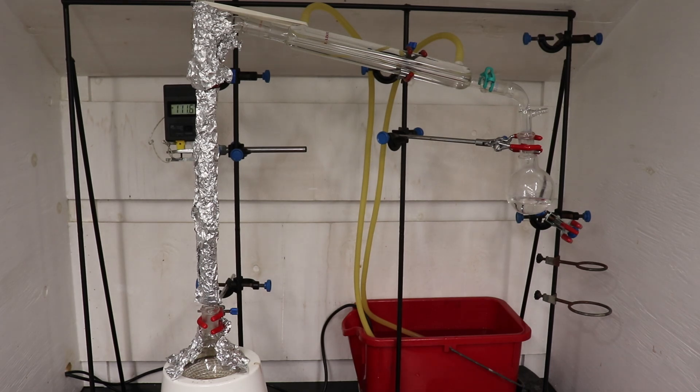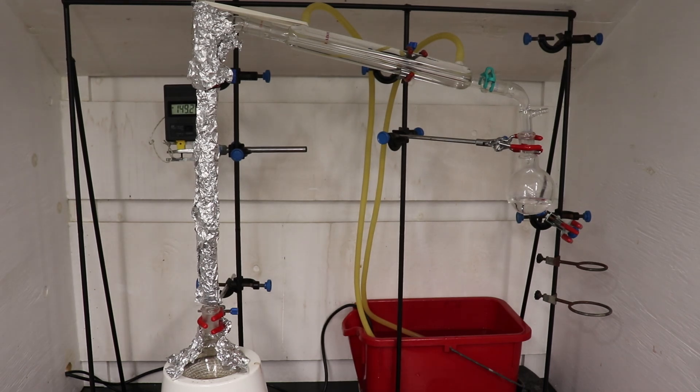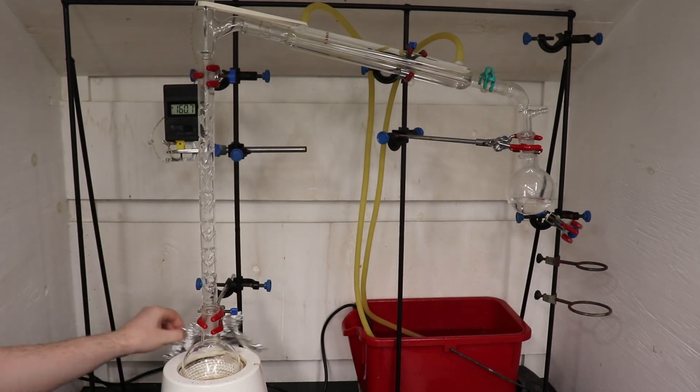At this point, you would typically switch out the receiving flask, and collect your product. However, what I did instead, was remove all the aluminum foil, and drop the mantle, to quickly stop the distillation.